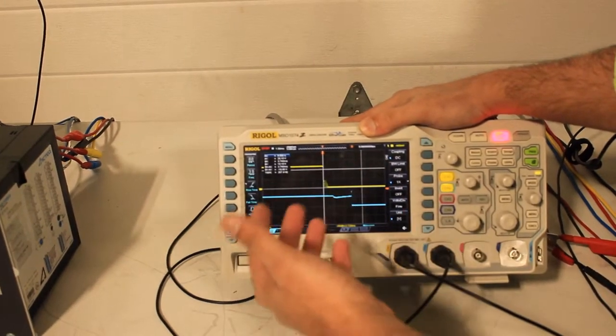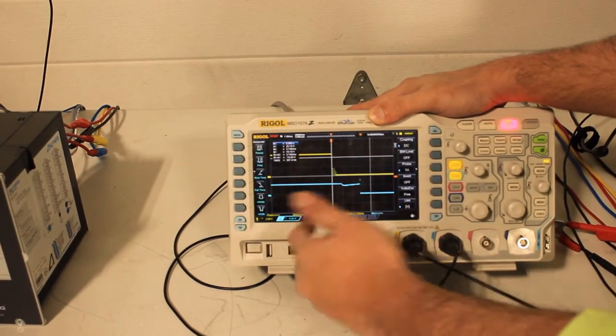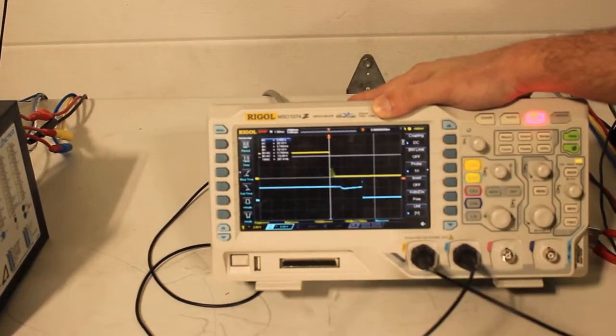Each box is one millisecond on the scale, so according to this, the quencher went off in less than three milliseconds.